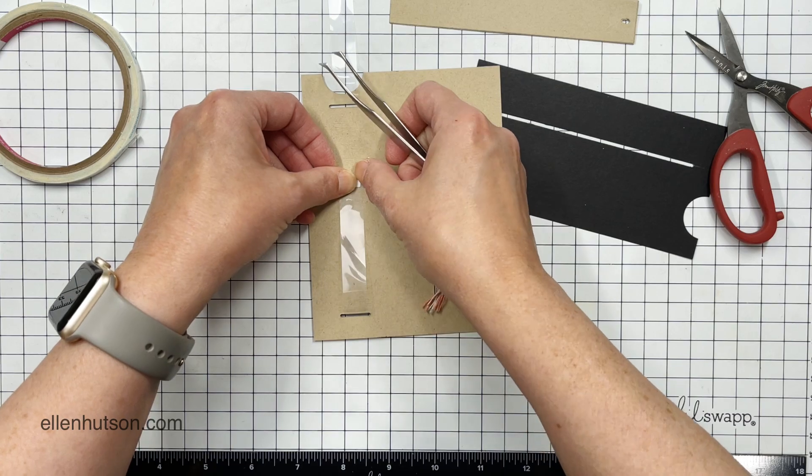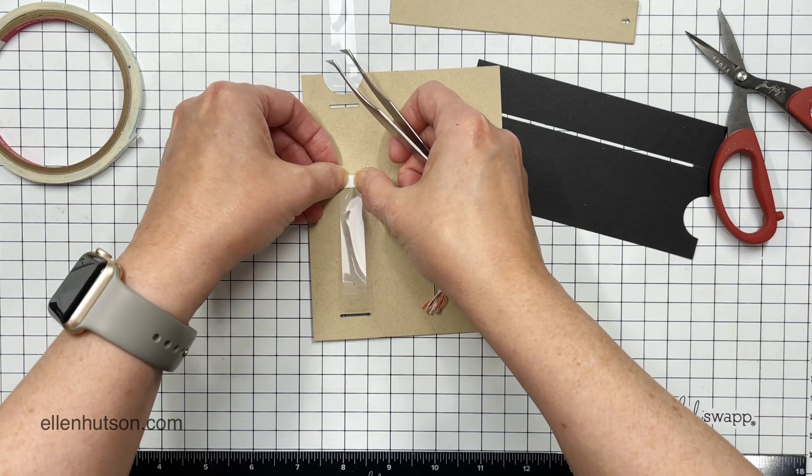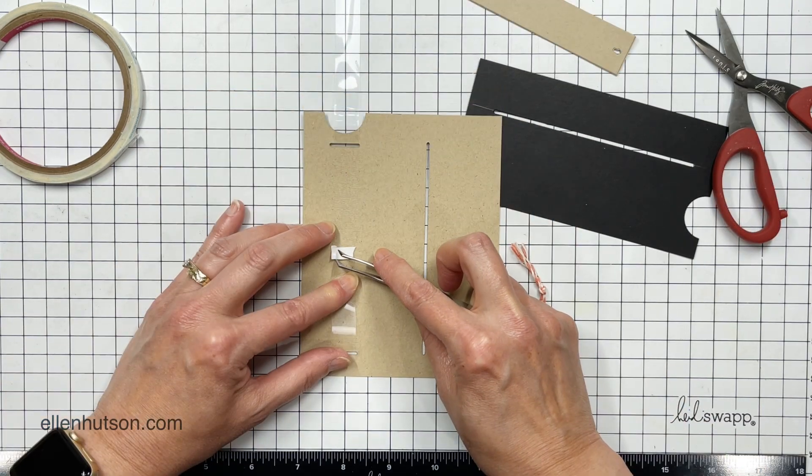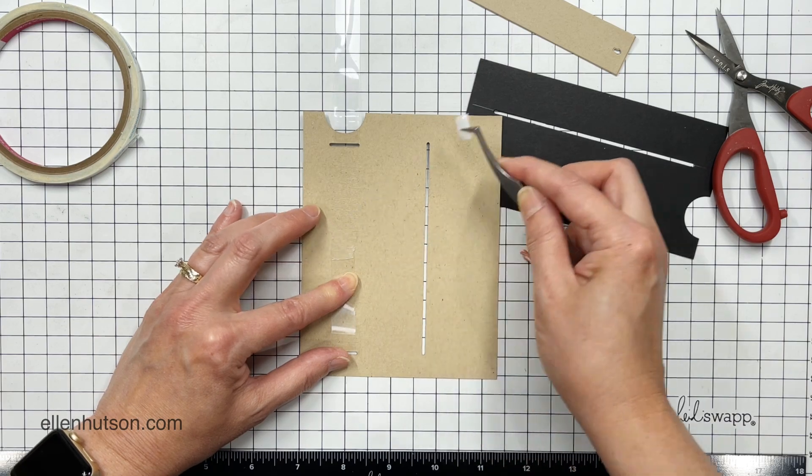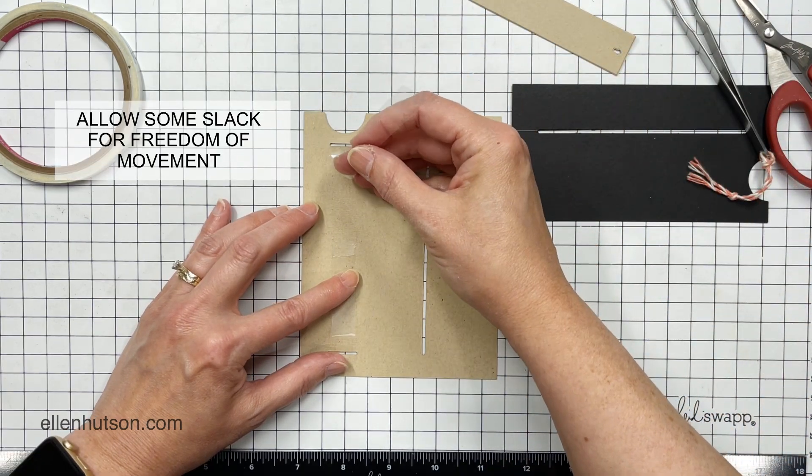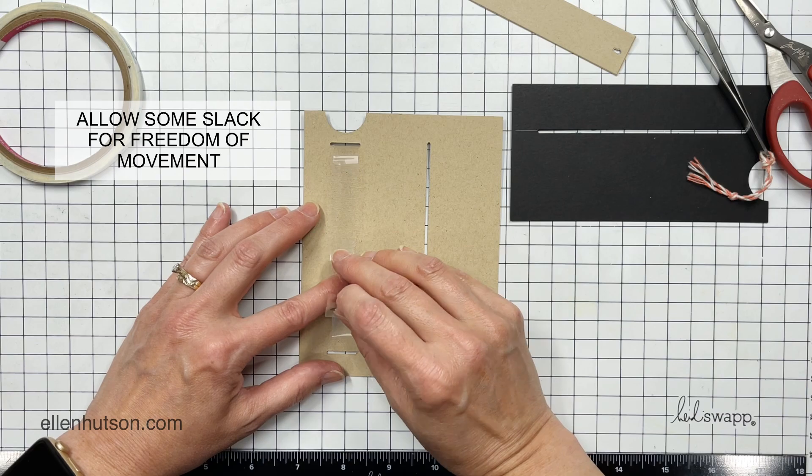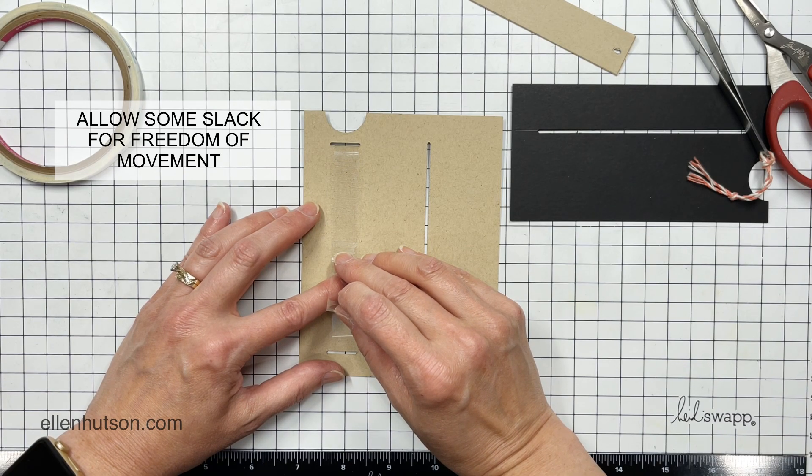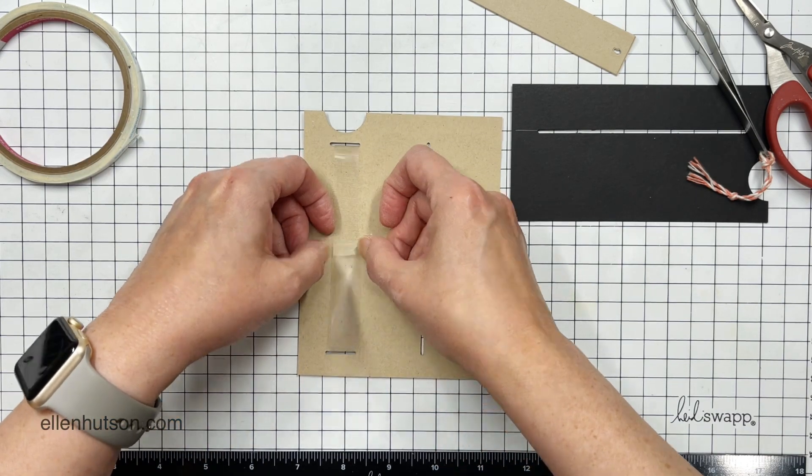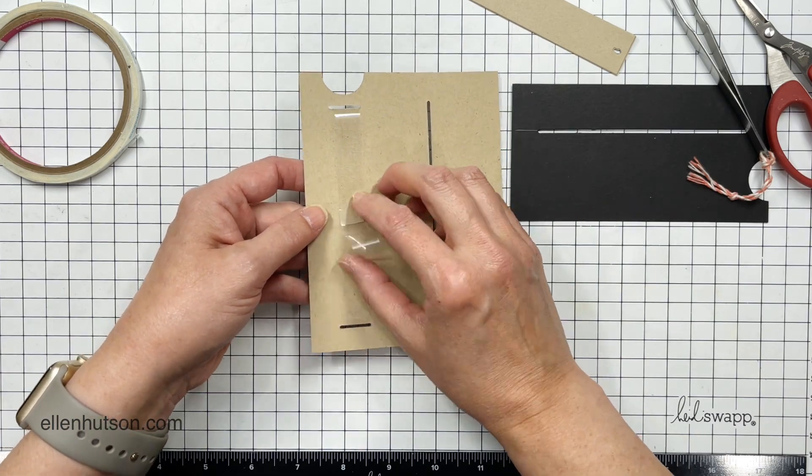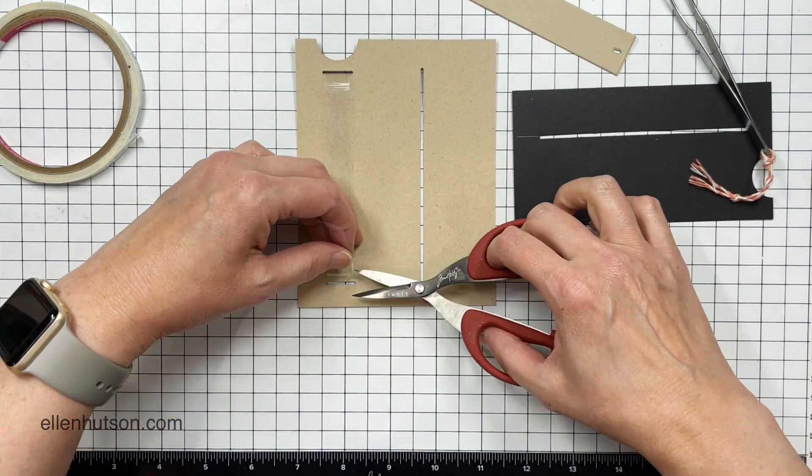I'm going to use a piece of tape to secure these together. I like to use double-sided sticky tape, and when I connect the two ends together, I want to make sure that I have enough slack that this will move freely back and forth. The belt needs to move, and I like to test it like this before I trim off the end.